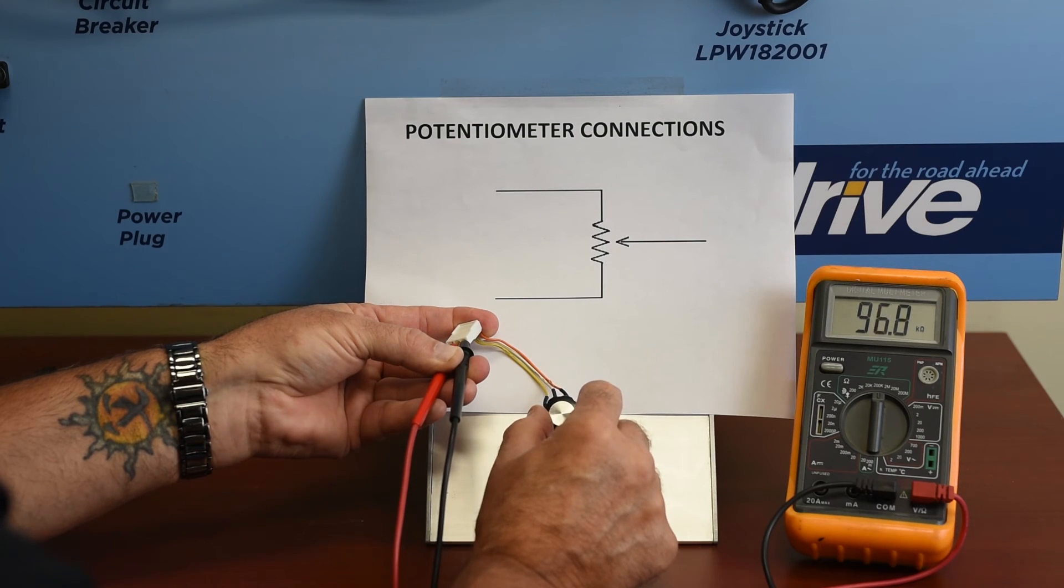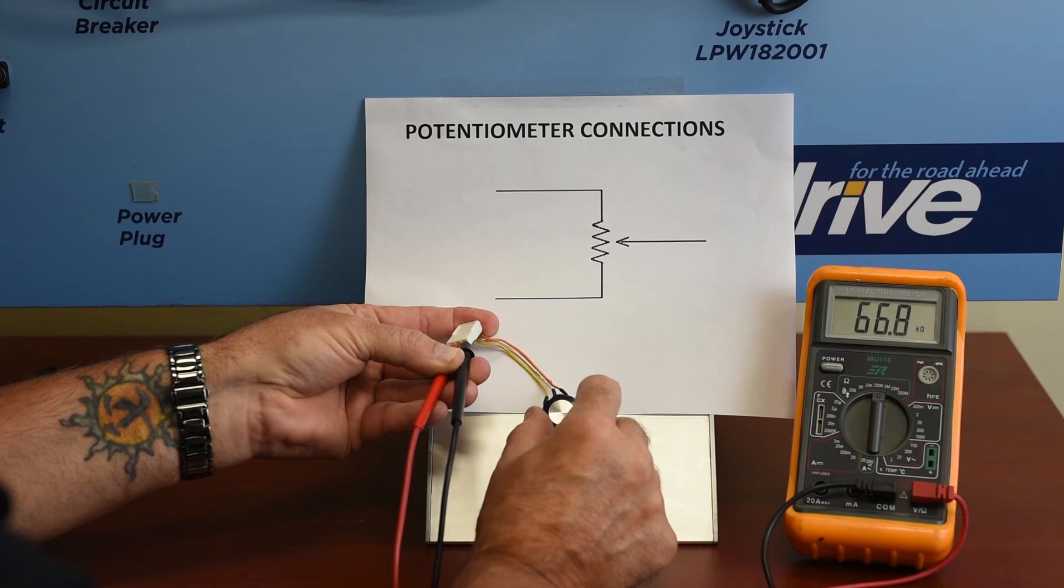And then we swing it back the other way, just to make sure. Very slowly. And we're not finding any dead spots or shorts.